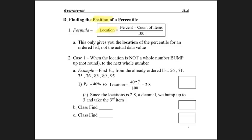So we start by taking the percent we're looking for. Keep in mind, don't change that to a decimal, leave it as is. So if you want the 35th percentile, just use the number 35, multiply by the count of items, and divide by 100.